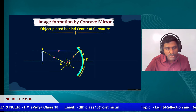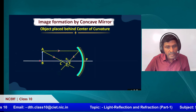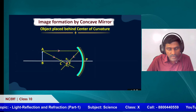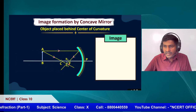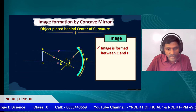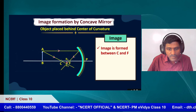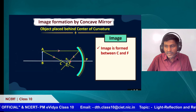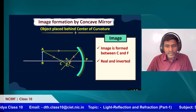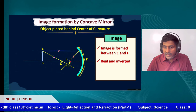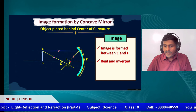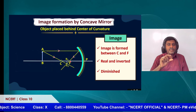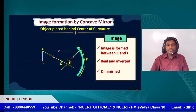The image A1B1 is the image of AB. Comparing the image: it is inverted — AB is upward while A1B1 is downward. The image is real and inverted. It is also diminished — it becomes smaller when compared to the object. So wherever you place the object beyond C, the image is formed between C and F, and it is real, inverted, and diminished.